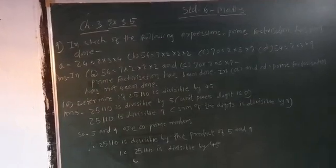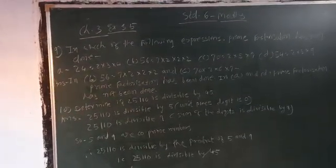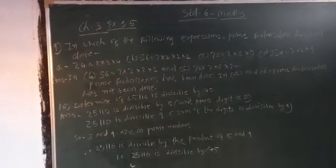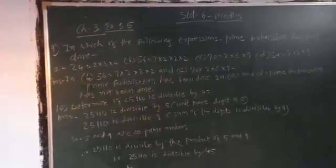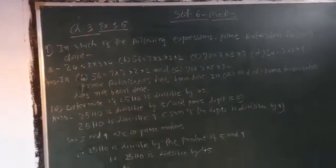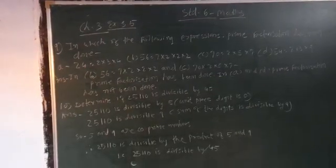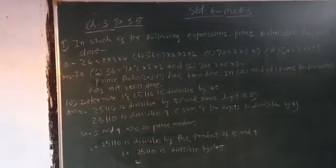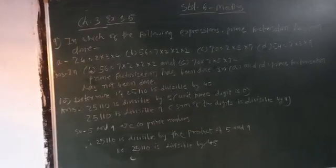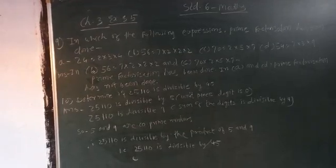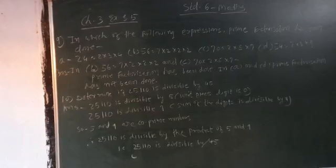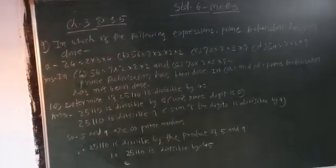To answer, 25,110 is divisible by 5 because the unit place digit is 0. 25,110 is divisible by 9 because the sum of the digits is divisible by 9. So, 5 and 9 are co-prime numbers. Therefore, 25,110 is divisible by 5 and 9, that is, 25,110 is divisible by 45. Okay, bye bye.